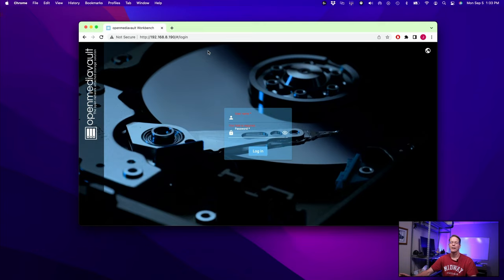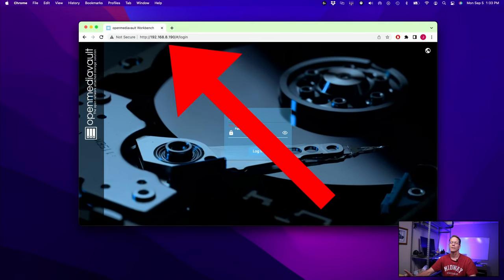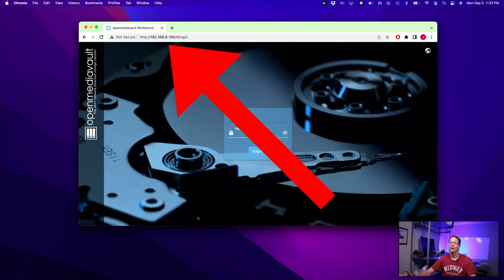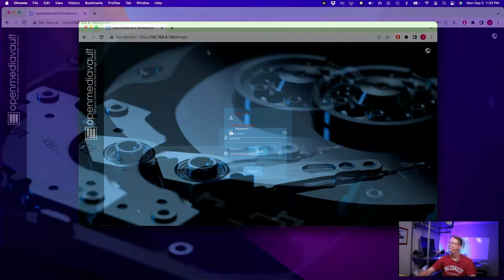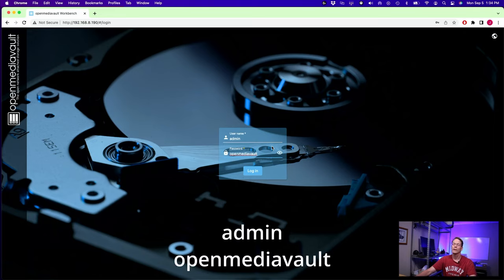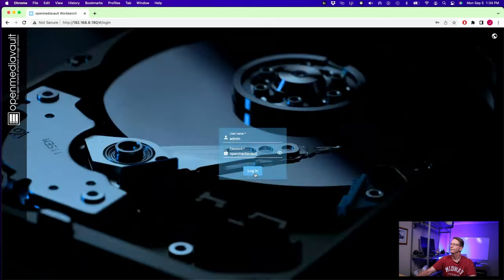We type in the address that we just got into the address bar 192.168.8.190, and that will take us to the OpenMediaVault login page. Type in admin for the username and OpenMediaVault for the password. Click login, and so now we'll just go through the login.